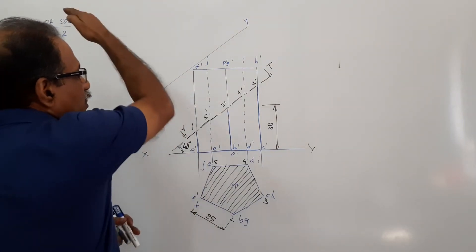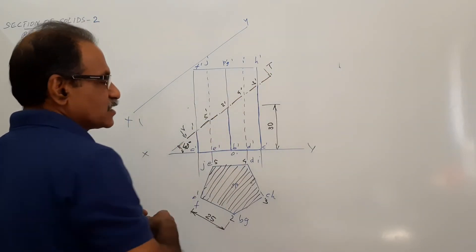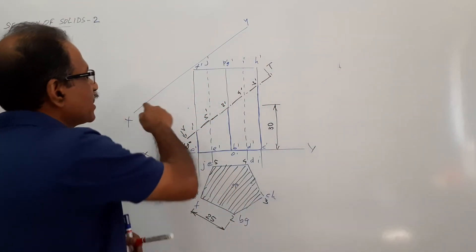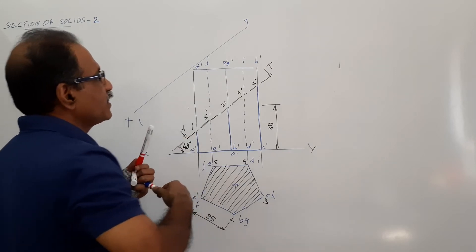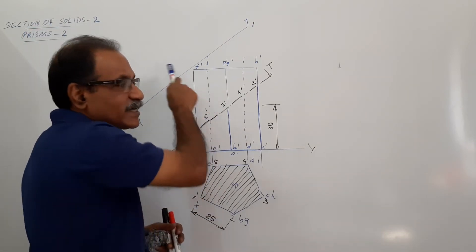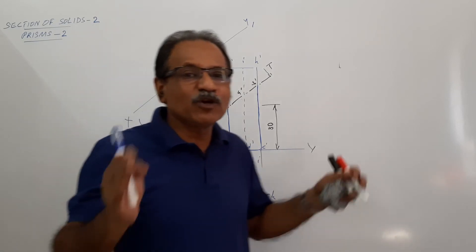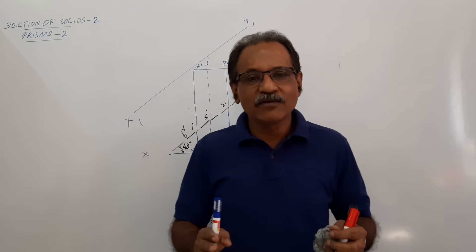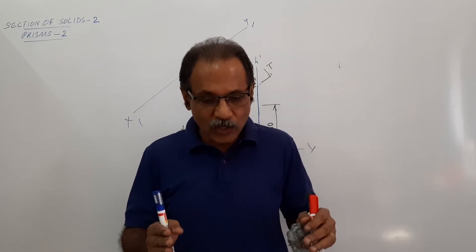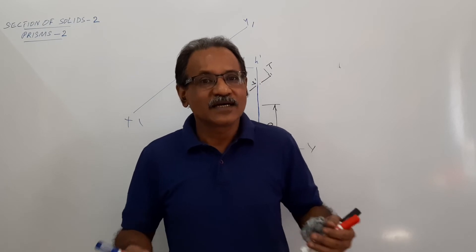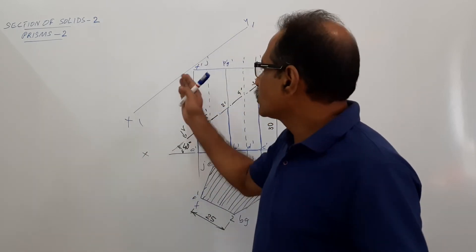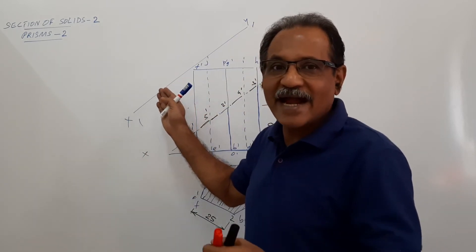Now draw projectors perpendicular to the cutting plane from 1-dash, 2-dash, 3-dash, 4-dash, and 5-dash. Draw x1y1 outside the elevation — preferably draw x1y1 outside the elevation. If it falls on the elevation, the true shape will mix up with the elevation. Avoid that. A drawing has an important aspect called presentability; when you draw and present it in the best possible way it will carry credit for neatness.